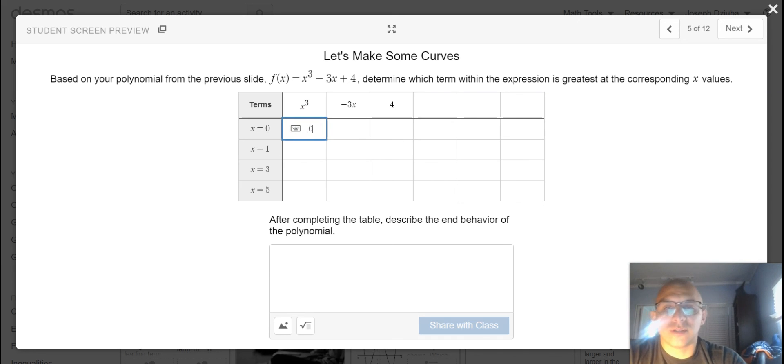And when I substitute zero into each of these terms, I can clearly see that four is the largest value at x is zero.